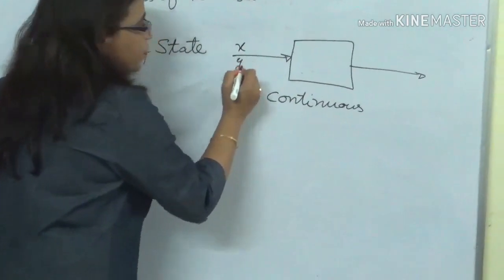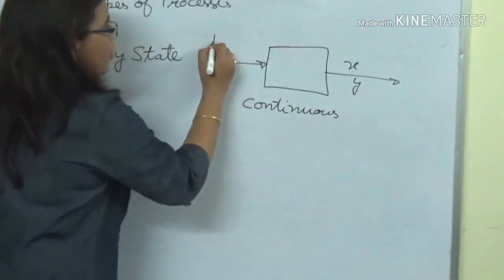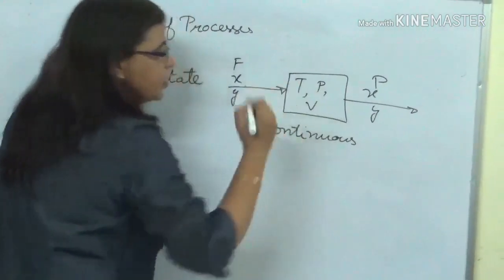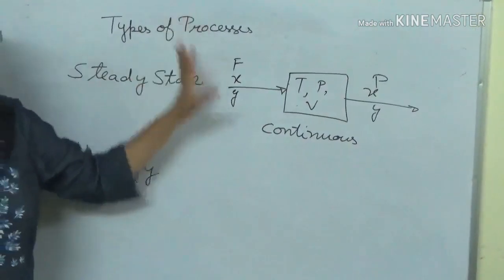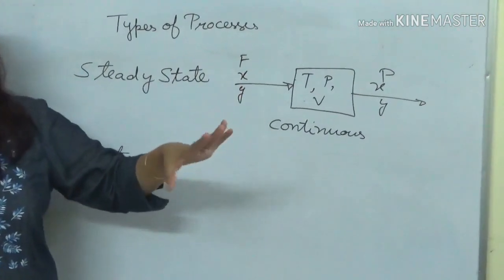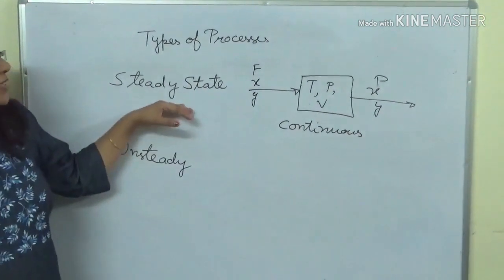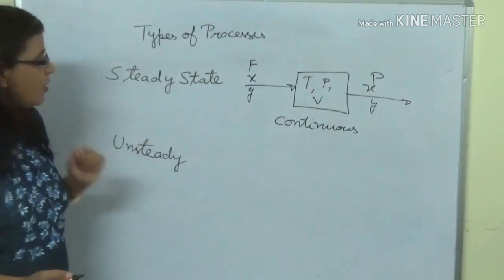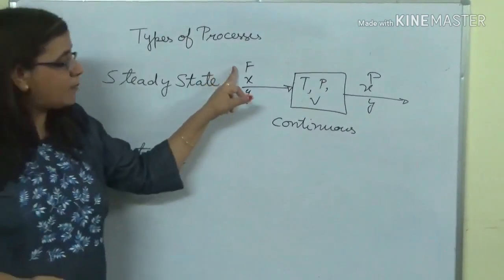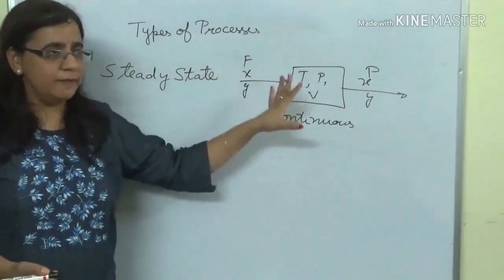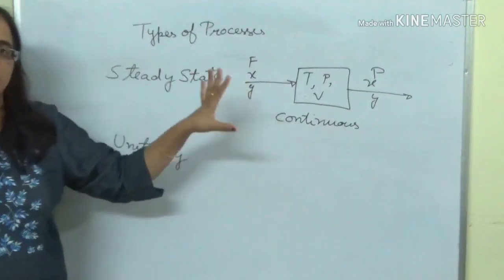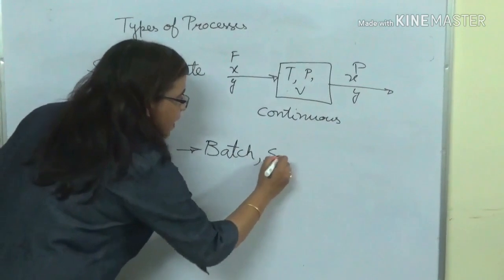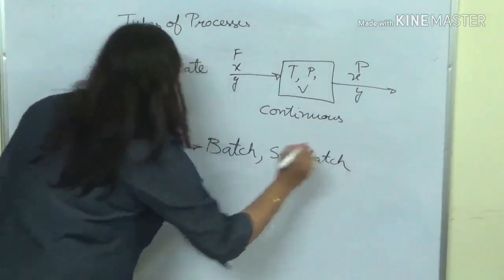The compositions at the inlet and outlet, the feed rate, the product rate, the temperature and pressure within the reactor, and the amount within the reactor — all these things remain constant with time; they may fluctuate slightly about a constant value. These are known as steady state processes, and usually continuous processes are run at steady state. In unsteady state processes, the values of the process variables in various flow streams and within the process unit change with time.